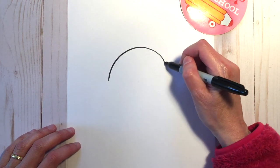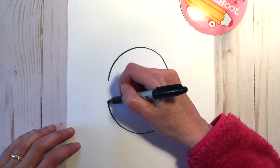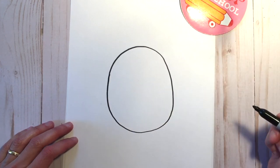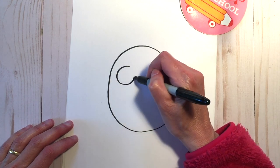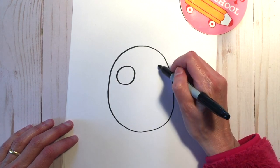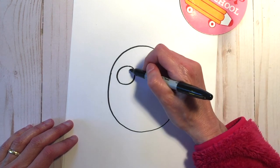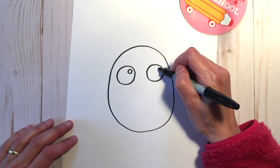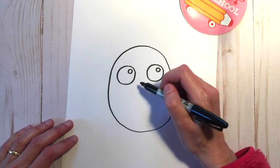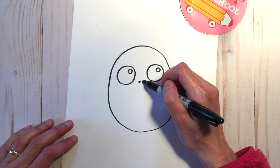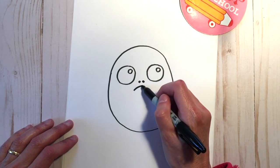Draw a big egg shape. Add two big circles for the eyes with smaller circles on the inside. Add two little dots and a little frowny face.